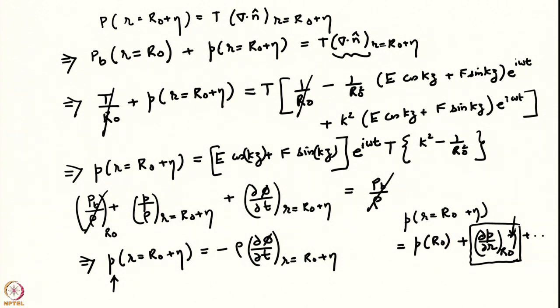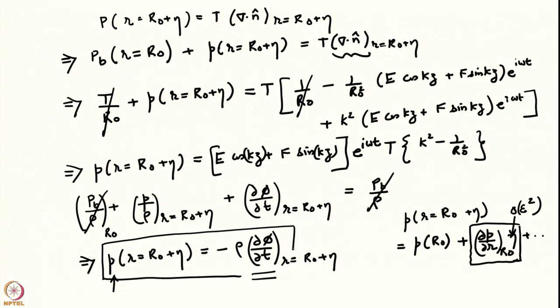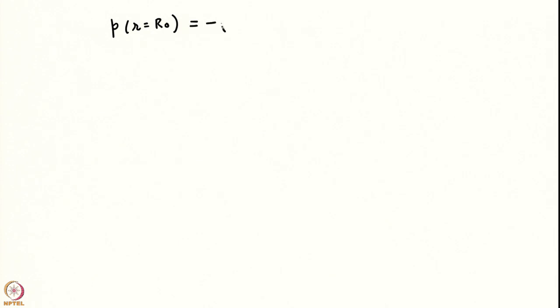Without proper non-dimensionalization, the expansion would start as ε·η1 + ε²·η2 and ε·p1 + ε²·p2, and so on. The correction term would be order ε² and is neglected in a linear theory. Similarly, this quantity also has to be expanded in a Taylor series. So in the linear approximation this equation will be applied at the undisturbed interface, which in the base state is just r = R0. We therefore obtain: p at r = R0 equals −ρ (∂φ/∂t) at r = R0.